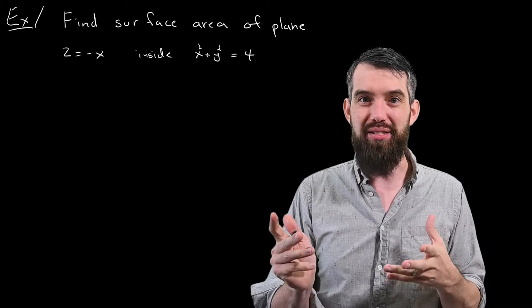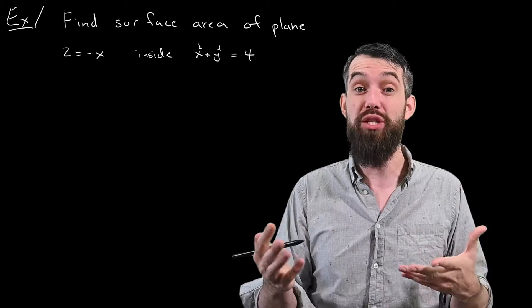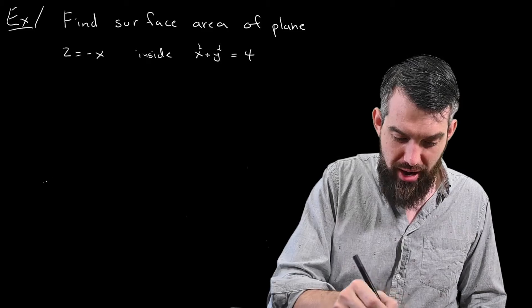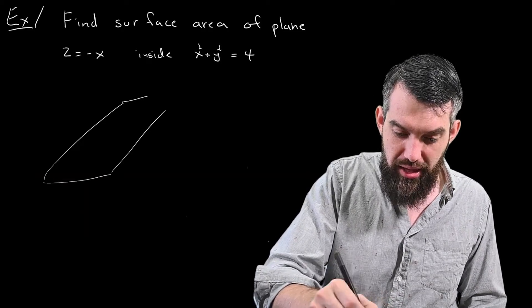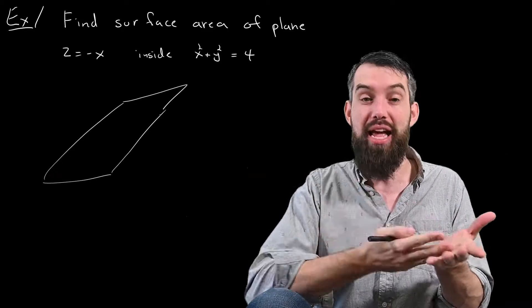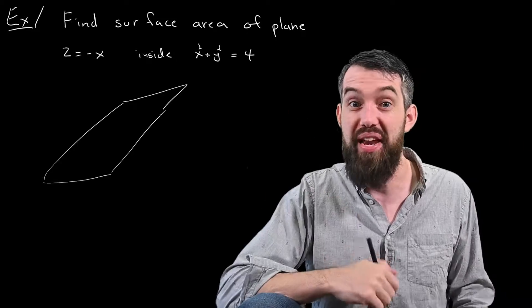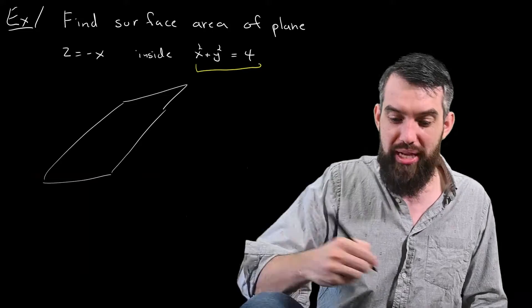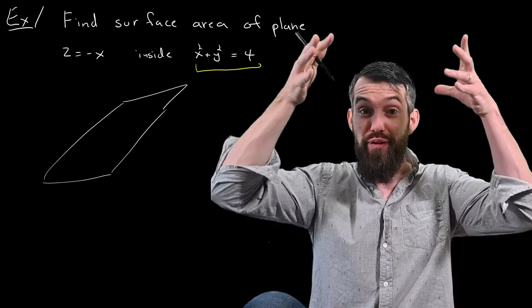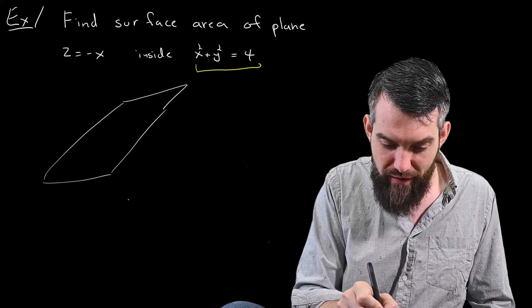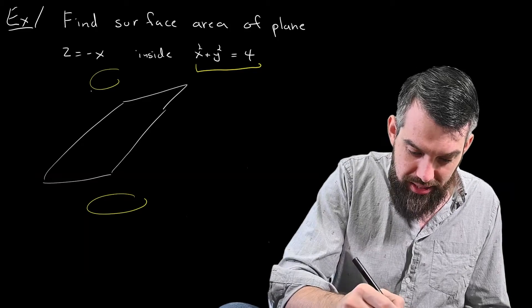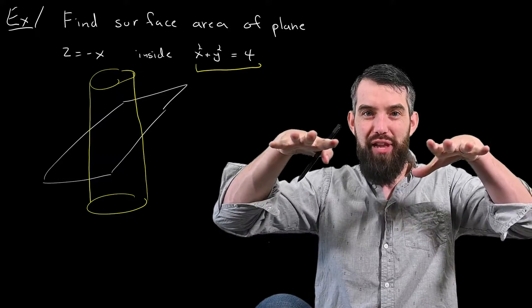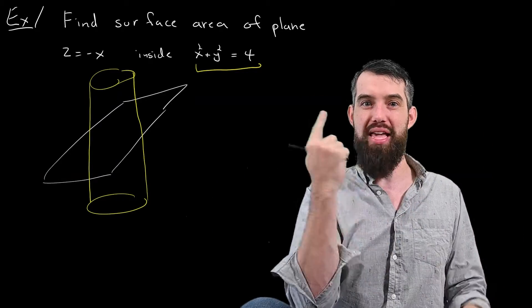So before I do anything else, I always like to try to visualize what's going on. So the way I like to visualize this is, first of all, let me draw a generic plane here, maybe something like that. I'll treat this as the plane z equals minus x, although I haven't bothered with any axes. Then I need to draw a cylinder as well, that's what x squared plus y squared equals 4 is, it's an infinite cylinder. And so if I come along here and draw a cylinder like that, now if the plane was completely flat, the cylinder coming up would form a circle here.